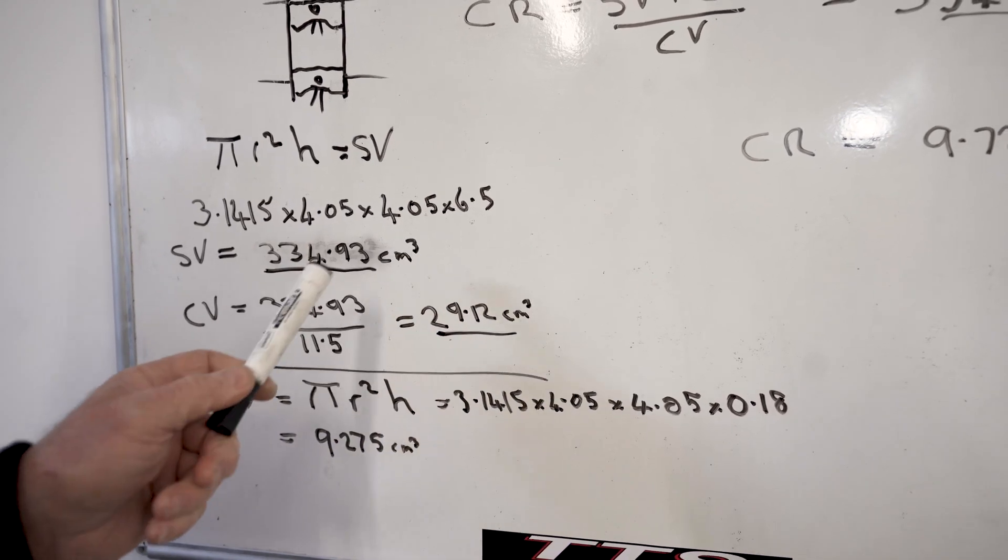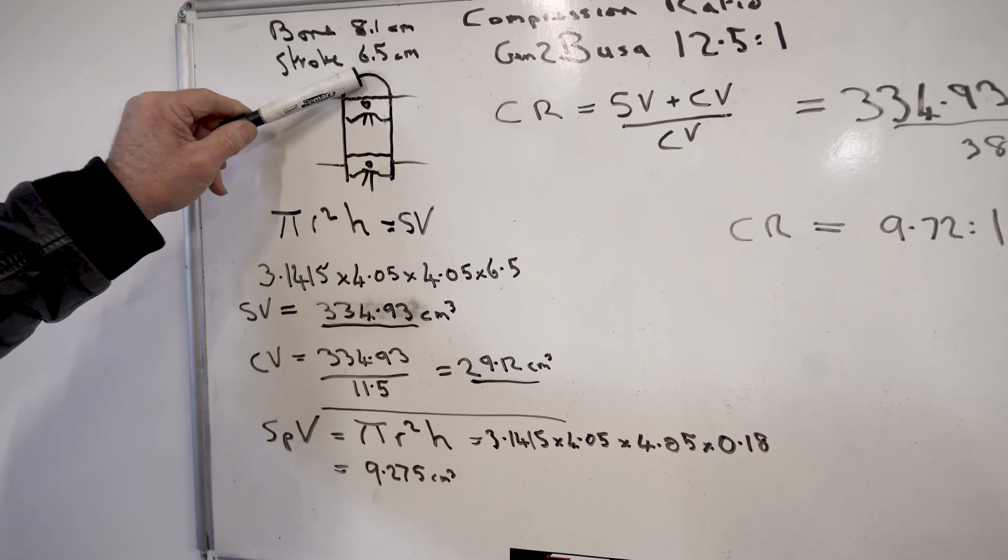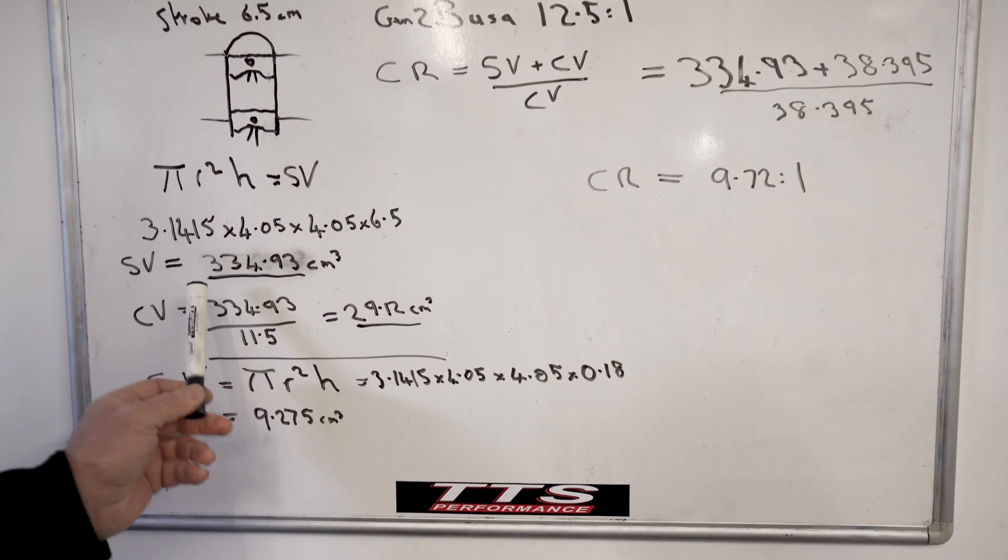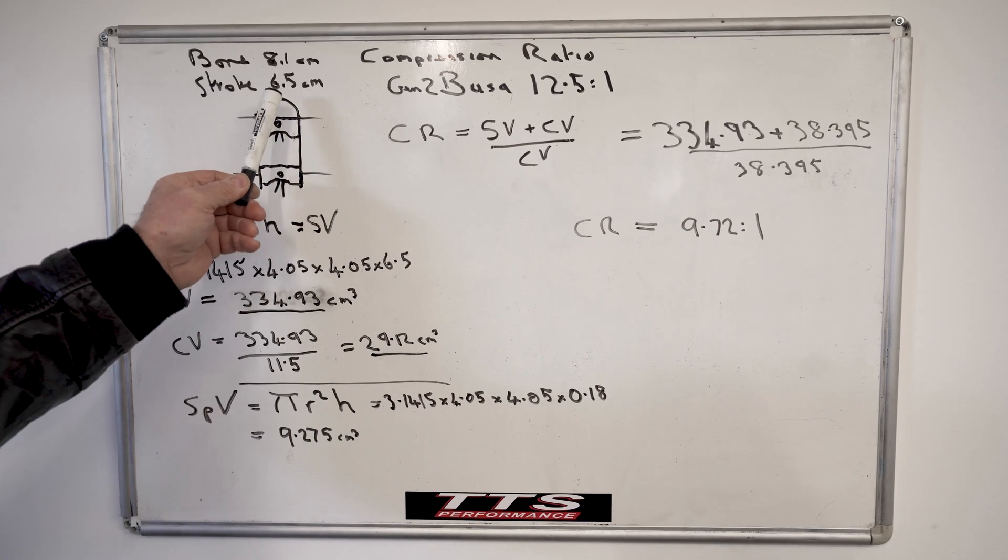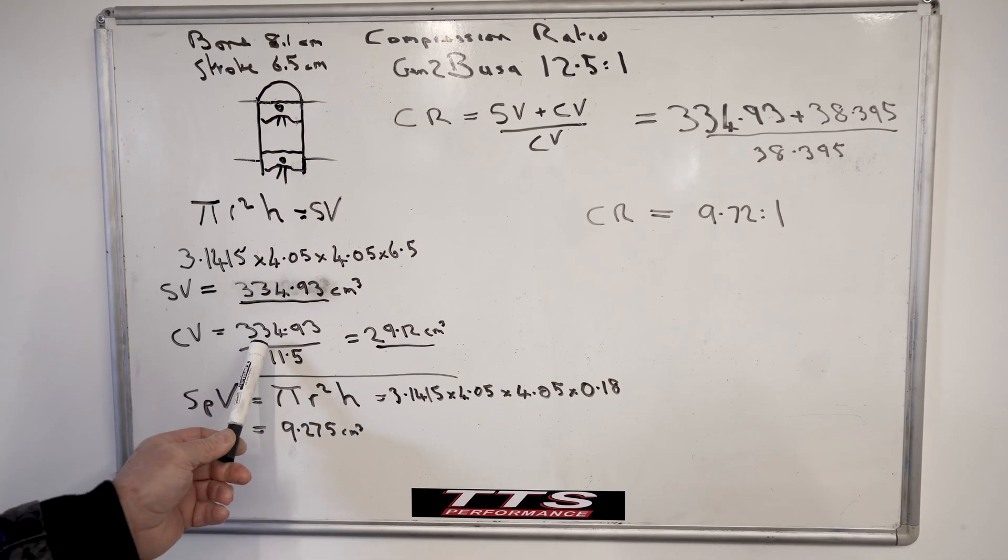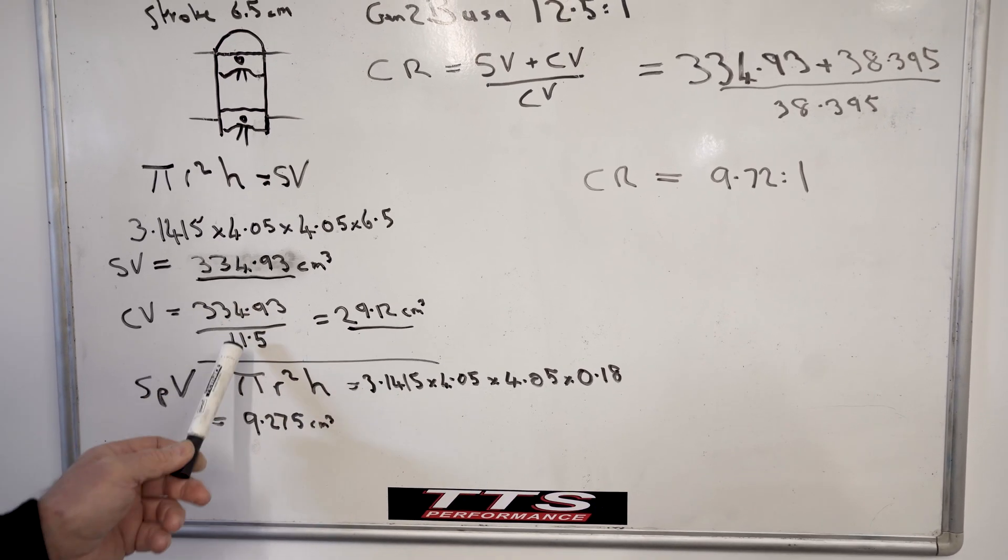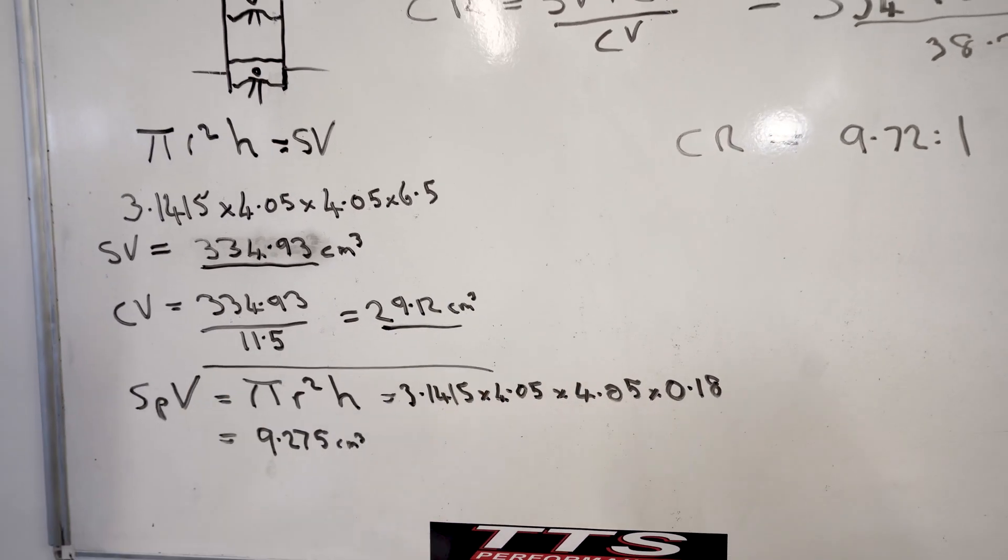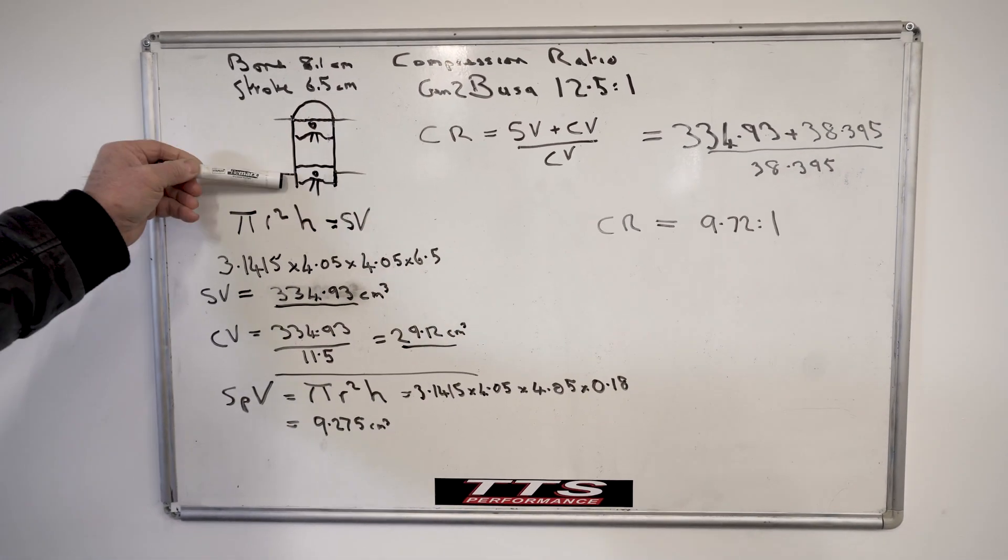The compressed volume, the part at the top, is the swept volume divided by the ratio less one, because one ratio is in the chamber. So it's 11.5 to 1, sorry, 11.5 ratios into the swept volume, which comes out at 29.12 centimeters cubed. So we know how much volume is in the top, we know how much volume is swept.